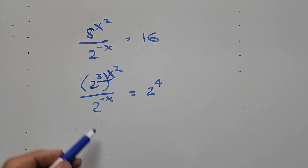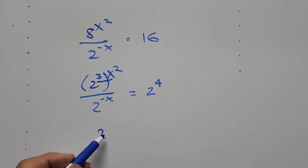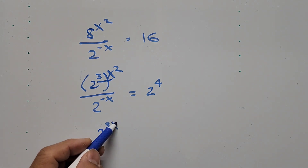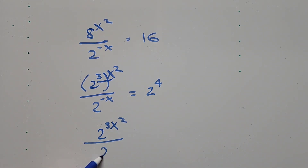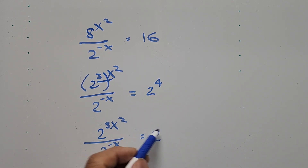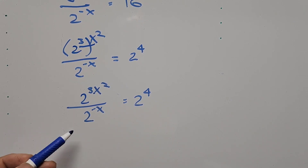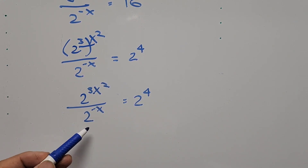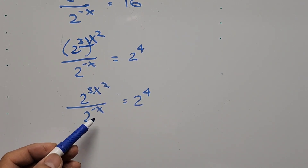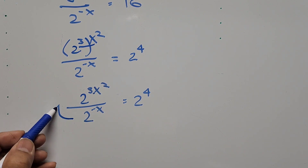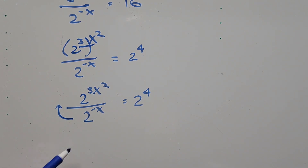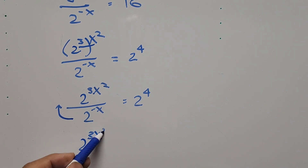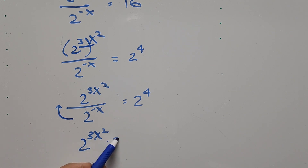Multiplying the exponents, we now have 2 to the power of 3x squared divided by 2 to the power of negative x equals 2 to the power of 4. The denominator with exponent negative x can be moved to the numerator.